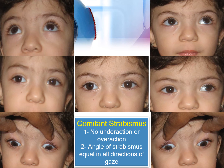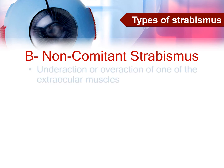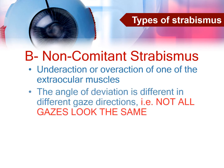On the other hand, in non-comitant strabismus there is under action or over action of one or more of the extraocular muscles. This causes the angle of deviation to be different in different gaze directions — in other words, the gazes do not look the same.